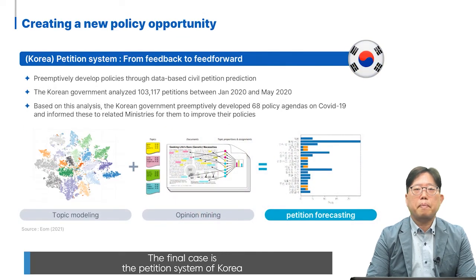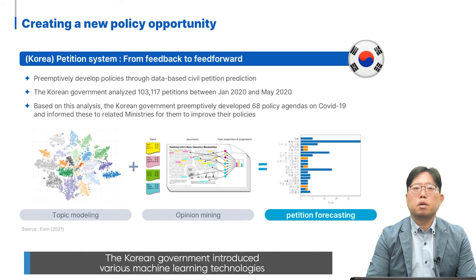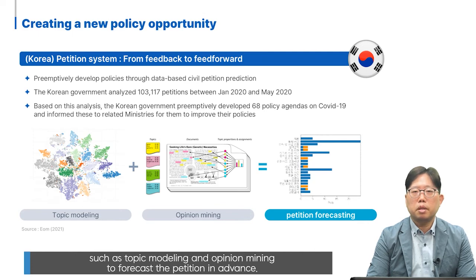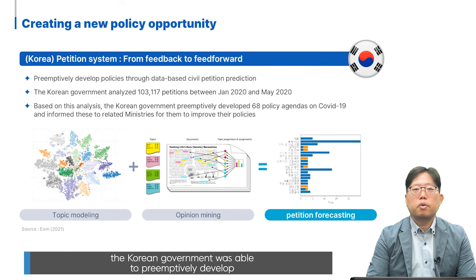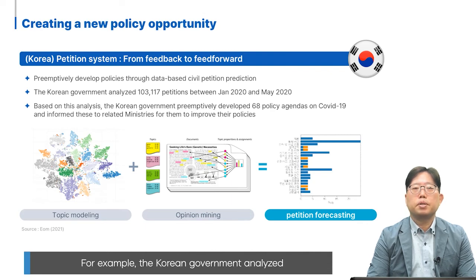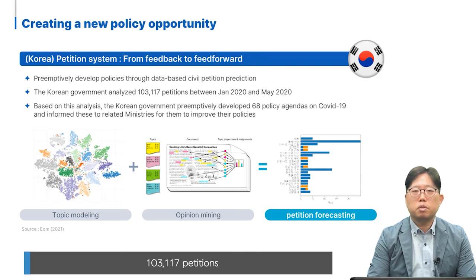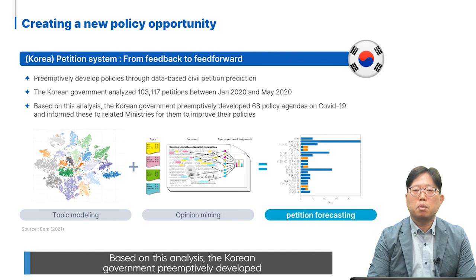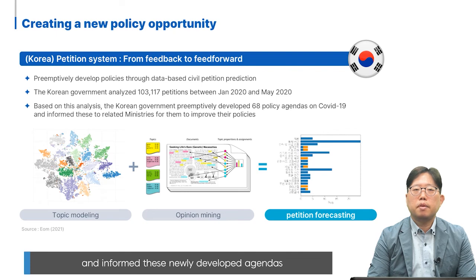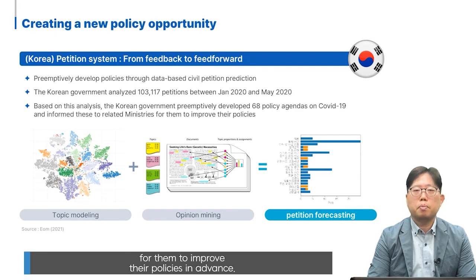The final case is a petition system of Korea, which transformed the function of a petition from feedback to feedforward. The Korean government introduced various machine learning technologies such as topic modeling and opinion mining to forecast petitions in advance. The Korean government analyzed 103,117 petitions between January 2020 and May 2020. Based on this analysis, the government preemptively developed 68 policy agendas on COVID-19 and informed these newly developed agendas to related government ministries for them to improve their policies in advance.